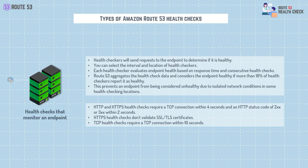Suppose you have a website or application and you want to make sure it's always available and working well for your users. AWS Route 53 health check regularly checks to see if your servers or other resources are healthy. You can choose how often and from where these health checks send requests to your resources. Route 53 evaluates health based on response time and consecutive checks, considering a resource healthy if more than 18% of health check reports are reported healthy.